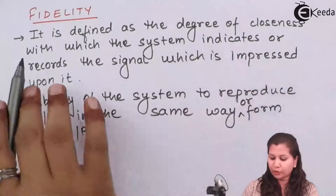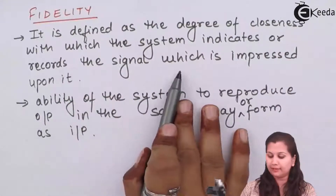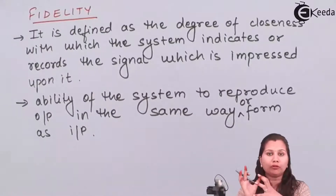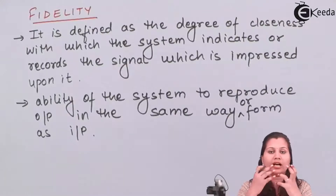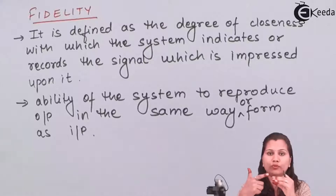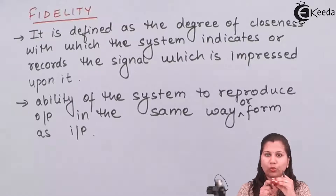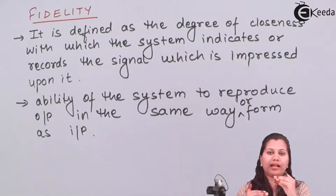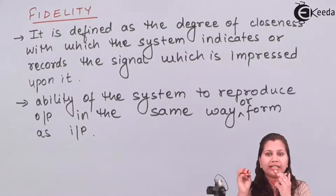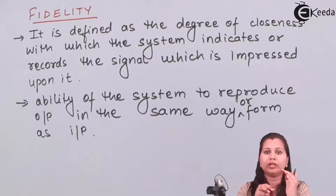Fidelity is defined as the degree of closeness with which the system indicates or records the signal which is impressed upon it. When we apply input to an instrument and get output, fidelity describes how close the output is to the input. For any unknown quantity, we define two values: the true value, which is the exact value, and the measured value, which is what the observer measures. How close the measured value is to the true value is called fidelity — how closely the instrument can reproduce the output in the same form as the input.